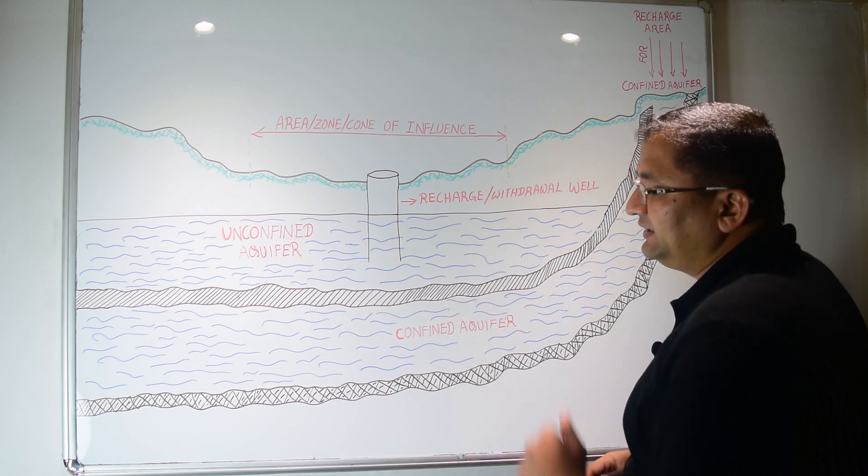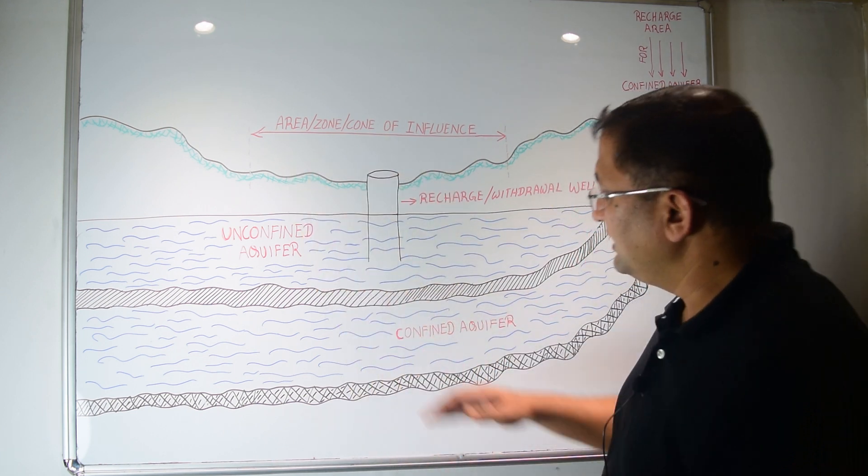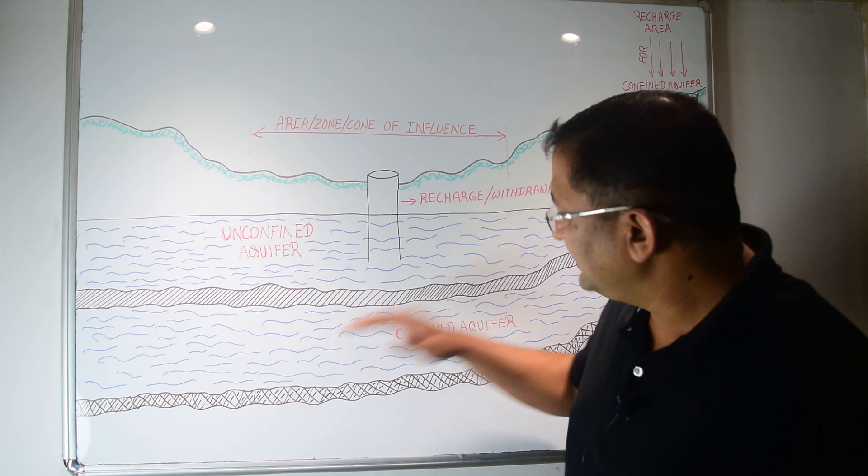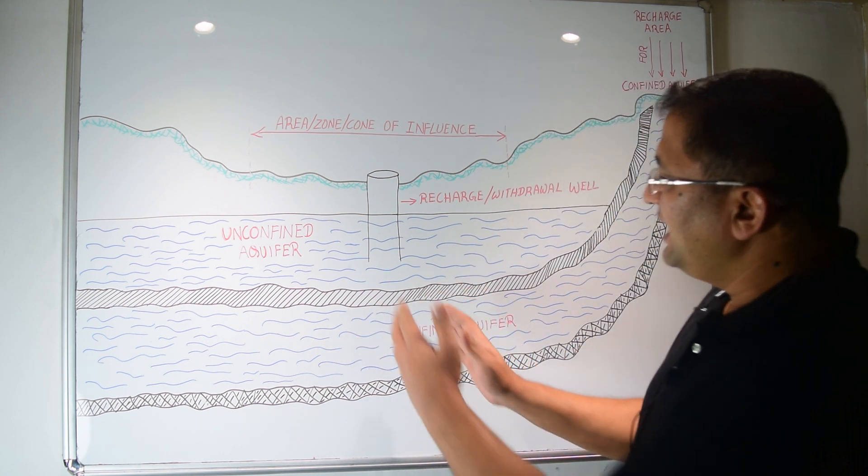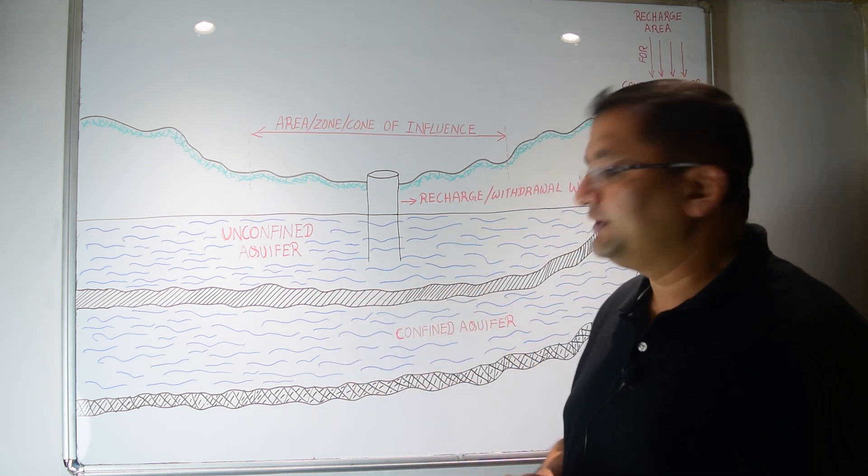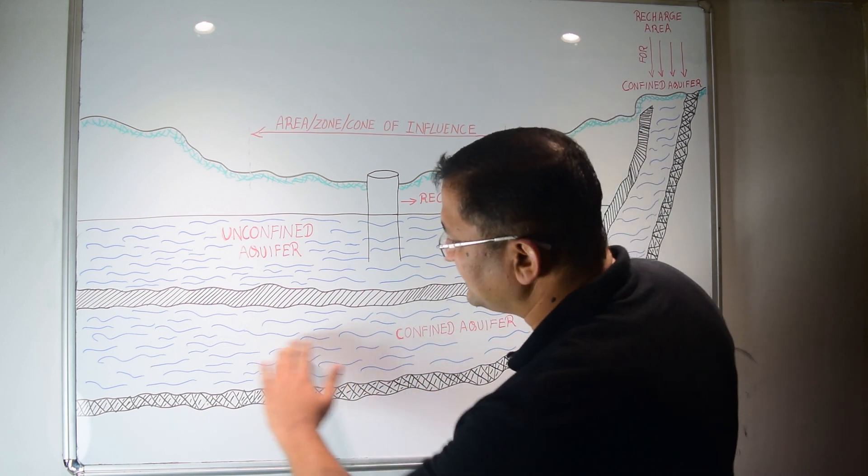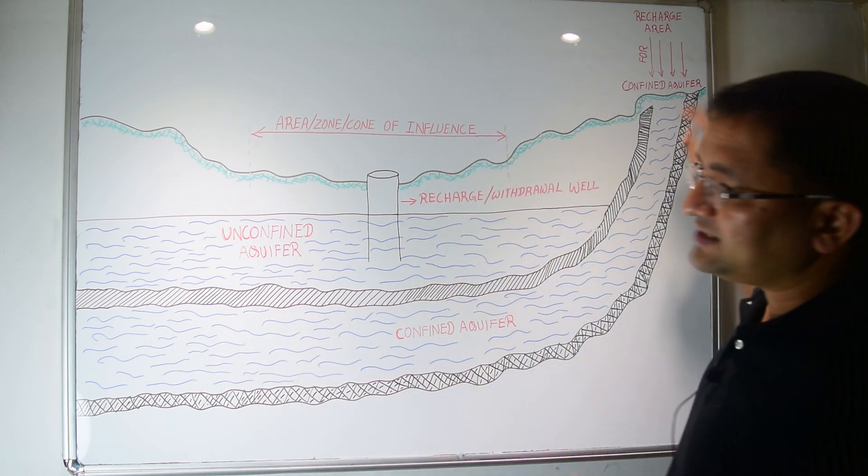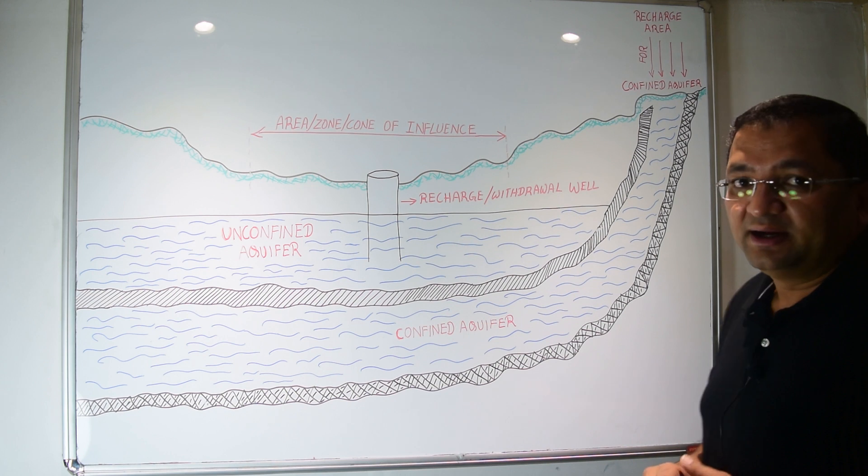The water here will be under pressure, greater than the atmospheric pressure, and the recharge area is generally away from the source point of withdrawal. As you can see here, this is the confined aquifer and the recharge area can be at a distance.